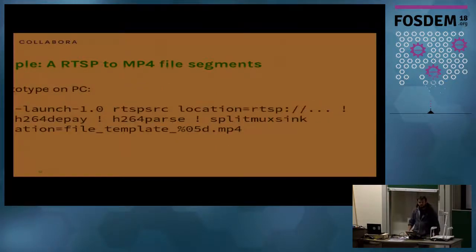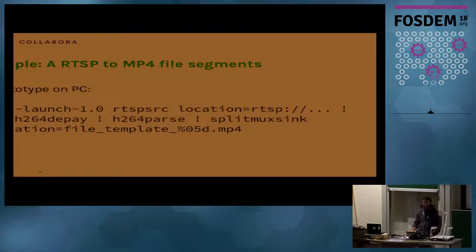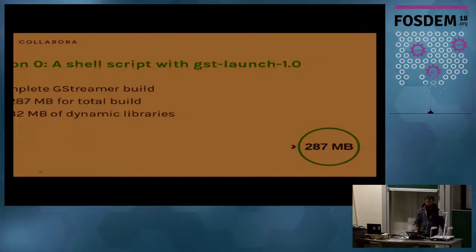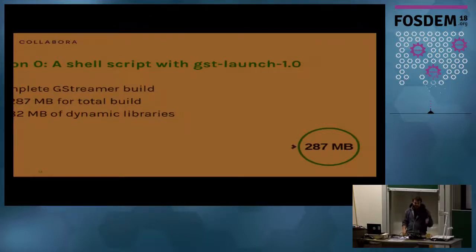On PC we did a very quick prototype — a simple GST launch line. It took 30 seconds and I had something that worked, so I thought that's going to be an easy project. Then I tried the same thing on the device by writing a simple shell script that just ran the previous command. The problem was that the whole GStreamer build is 287 megabytes, so that wouldn't fit.